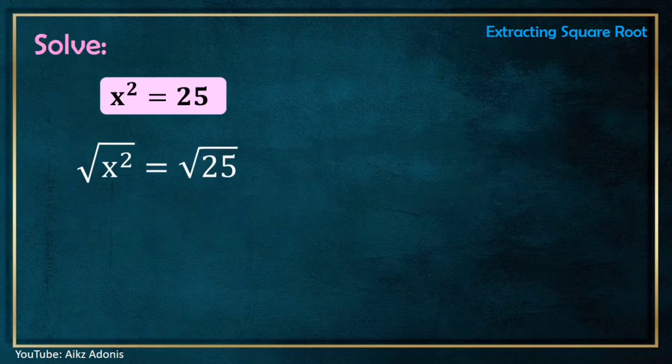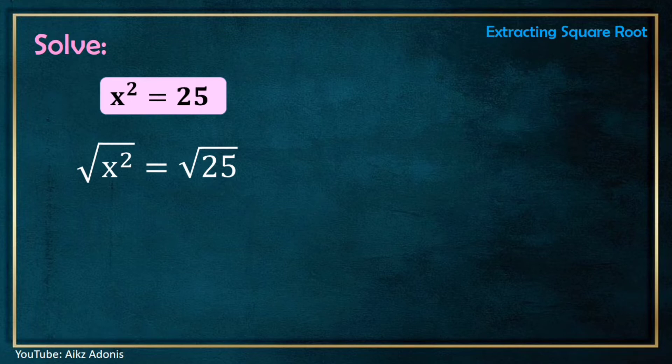Now let's solve x² = 25. To solve this equation, we will get the square root of both sides. So we will get the square root of x² and also get the square root of 25. Now let's simplify.